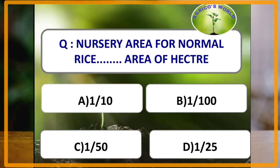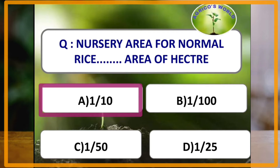The nursery area for normal rice is 1/10th of the area of a hectare. Since 1 hectare equals 10,000 square meters, 1/10th of that area — approximately 1,000 square meters — is used as the nursery area.